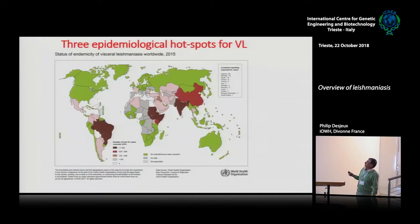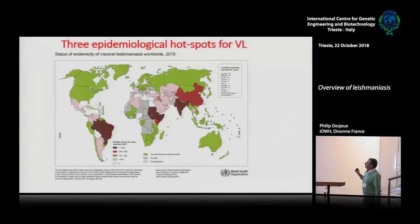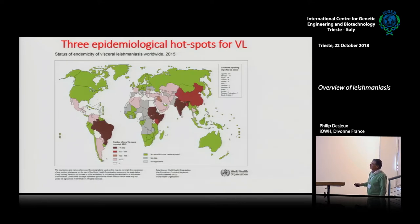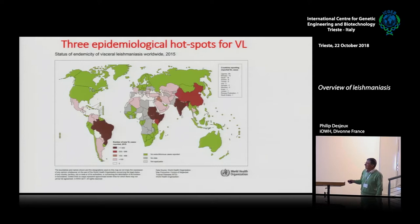What's the current situation? Not exactly current, as this is from 2015, but it's not far from the current situation. We can say there are three major hotspots for VL. One is South America, especially Brazil, which has a very different epidemiology from Africa and Asia because it's a zoonotic form with the dog as the main reservoir. We will come back to that.